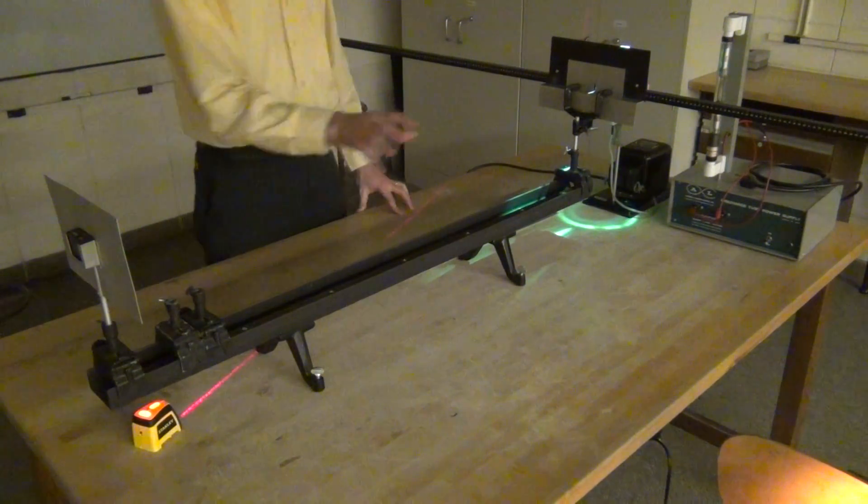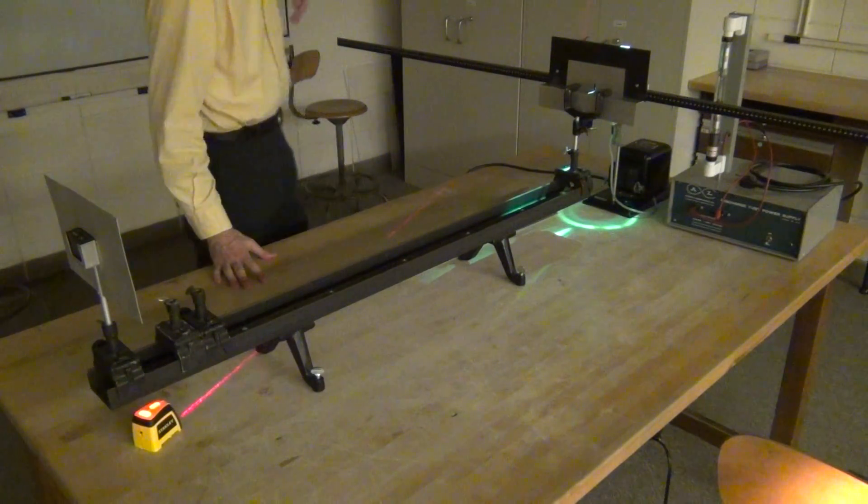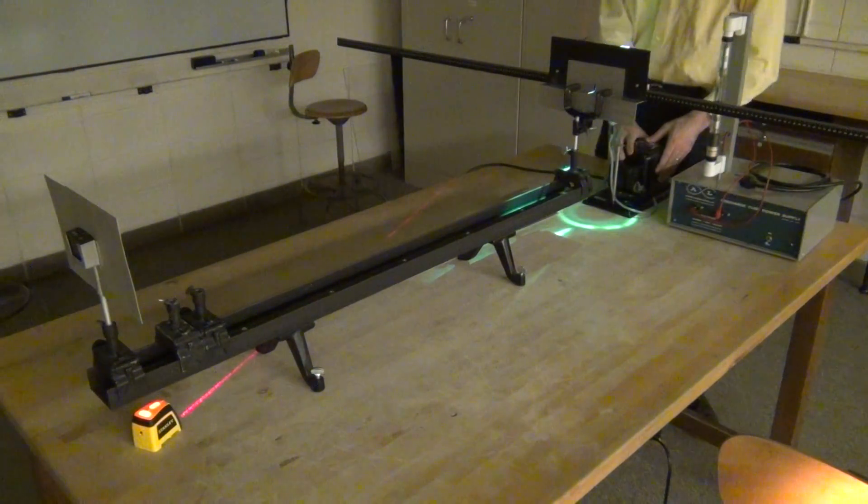Once you've calibrated your spectrometer, you know that distance, it's in good agreement and you're sure you've got good alignment. Then you're ready to switch over from the mercury to the hydrogen.